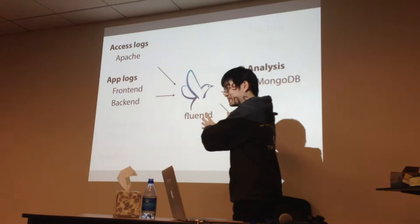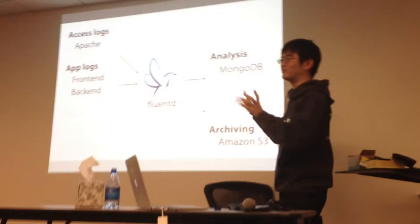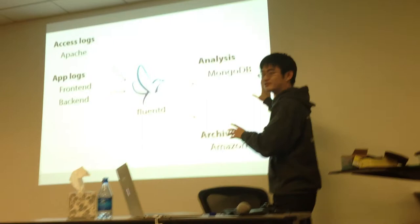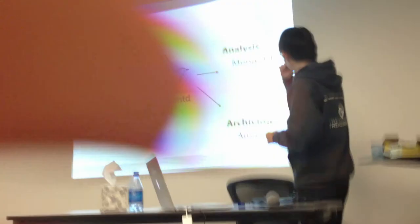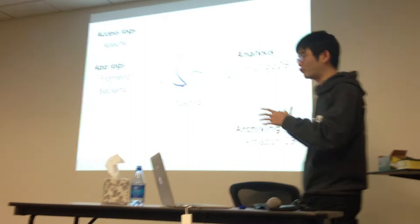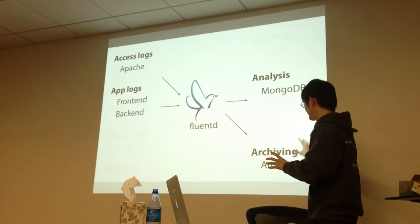Once you put logs into Fluentd, you can store them using Fluentd. Initially you might use MongoDB, but MongoDB does not handle archiving well. MongoDB is good for recent data — it's very low-latency and easy to query, but not good for archiving. You can add a plugin to store historical data to Amazon.